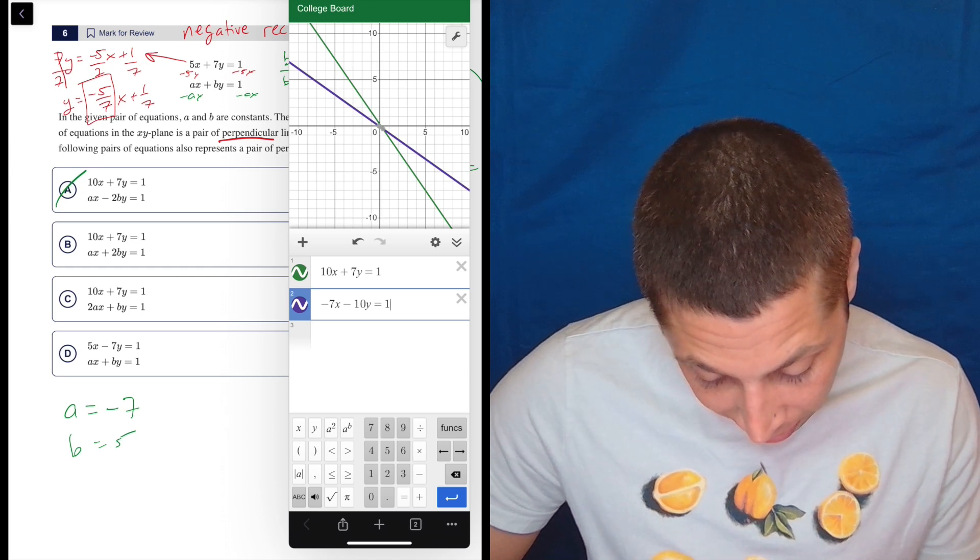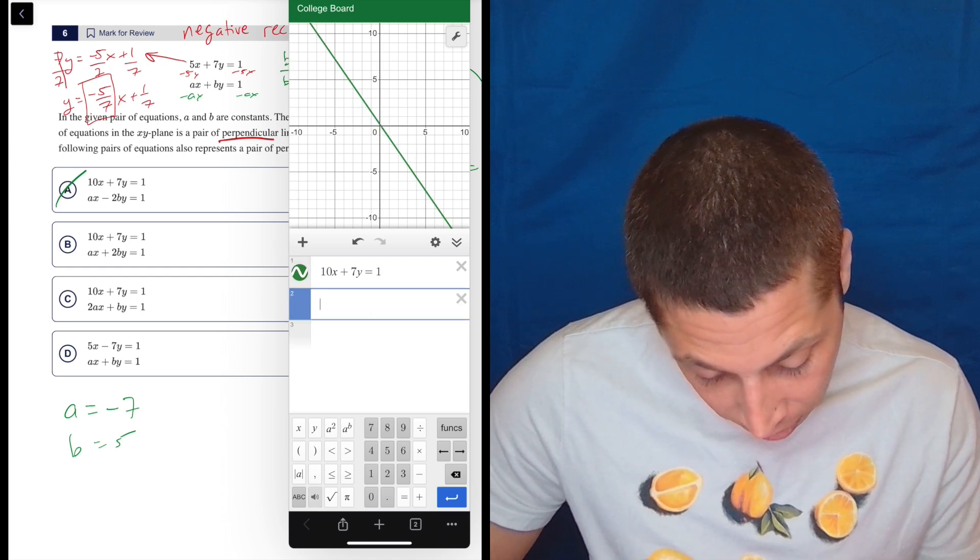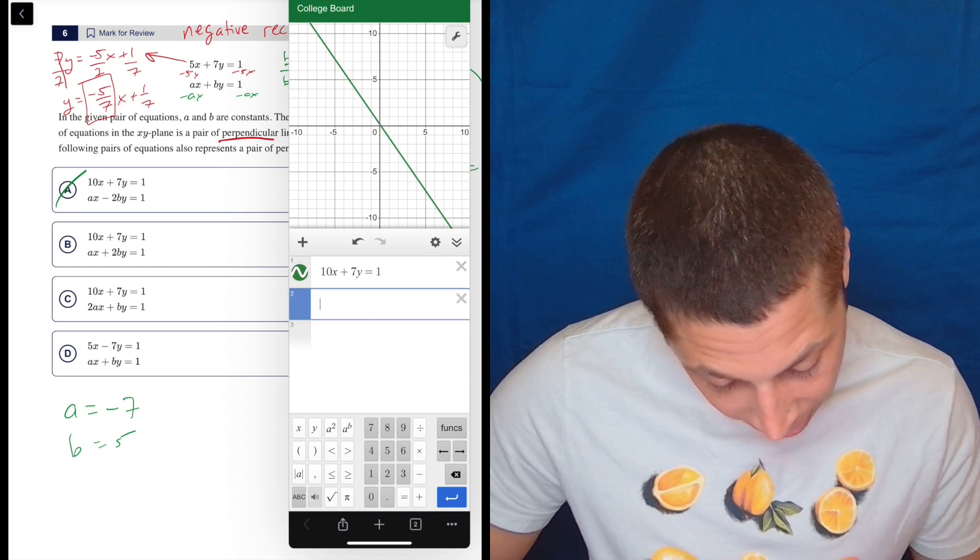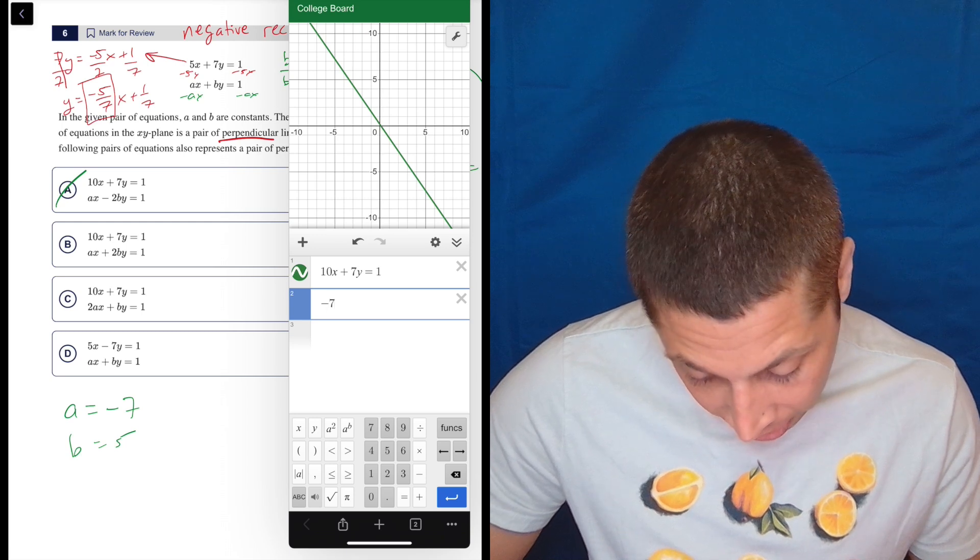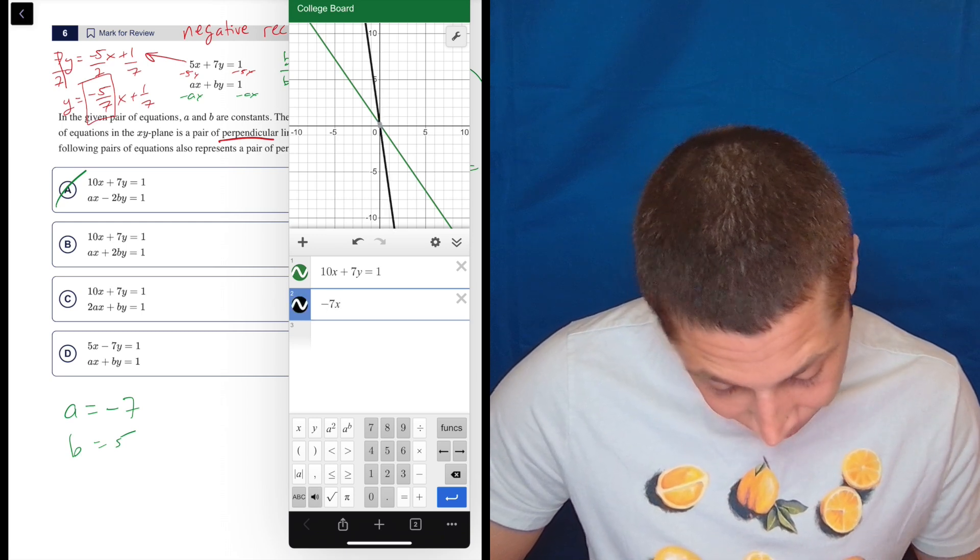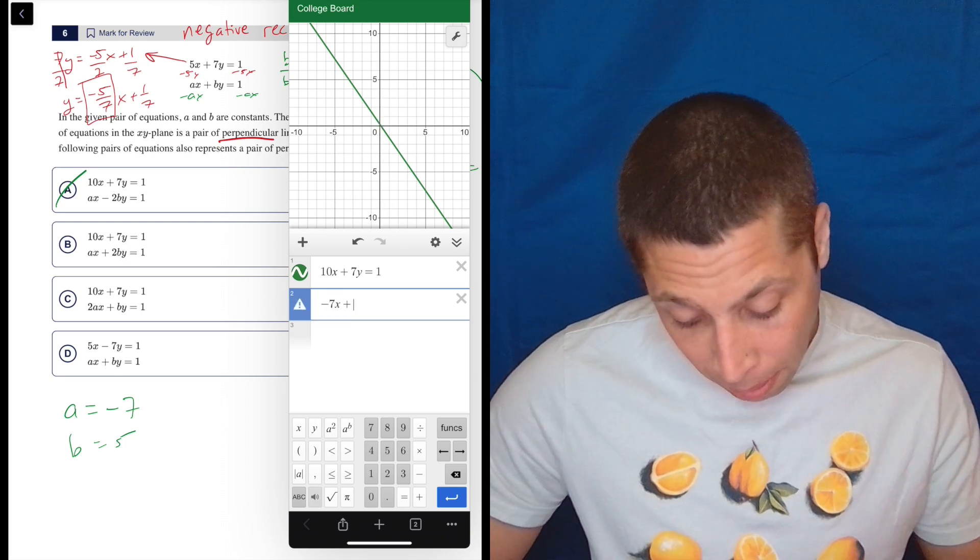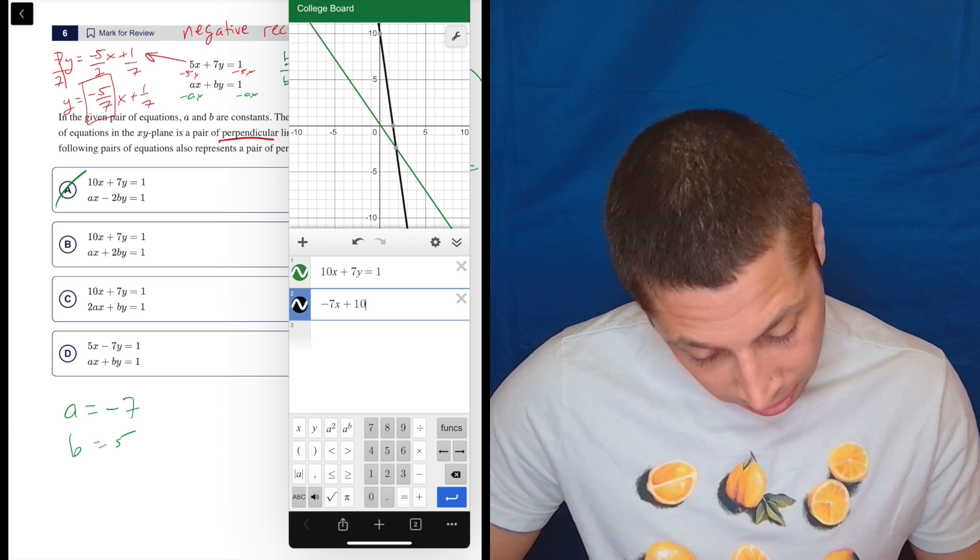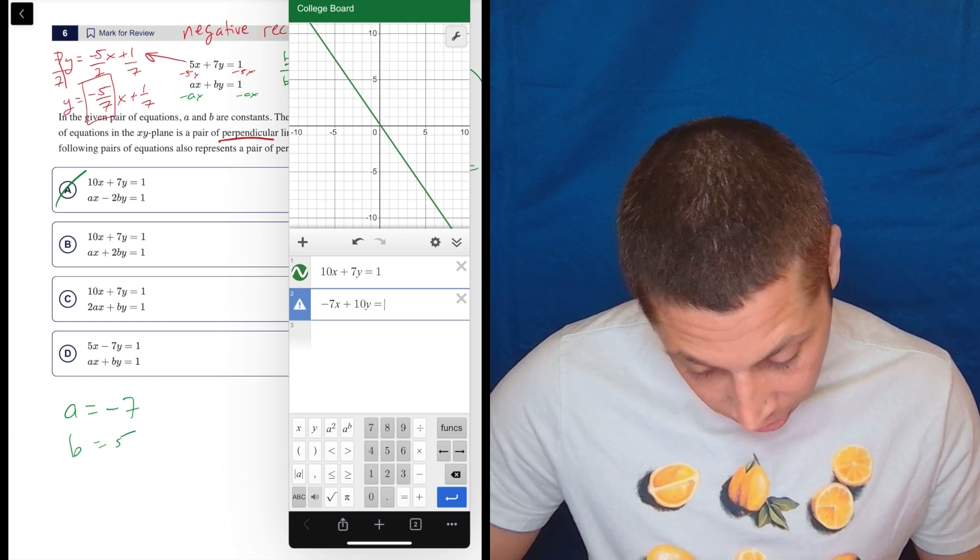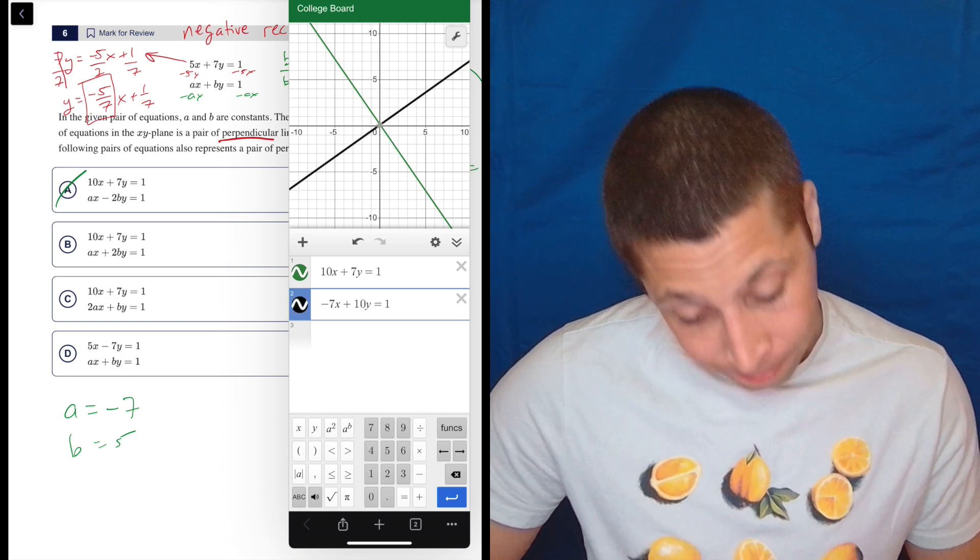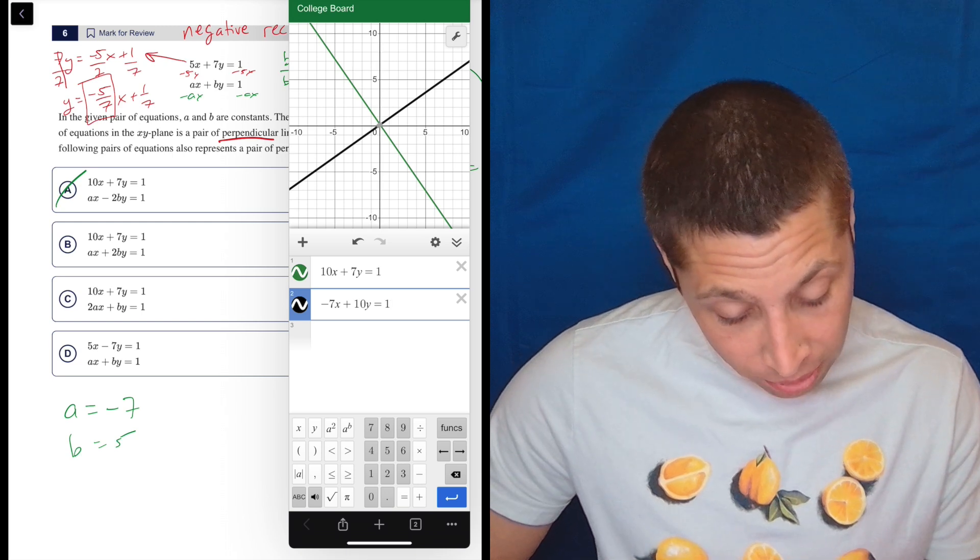Choice B, we have the same top equation, but we have a different bottom equation. So that is going to be negative 7x plus 2 times b. So that's plus 10y equals 1. That looks pretty good. That looks perpendicular.